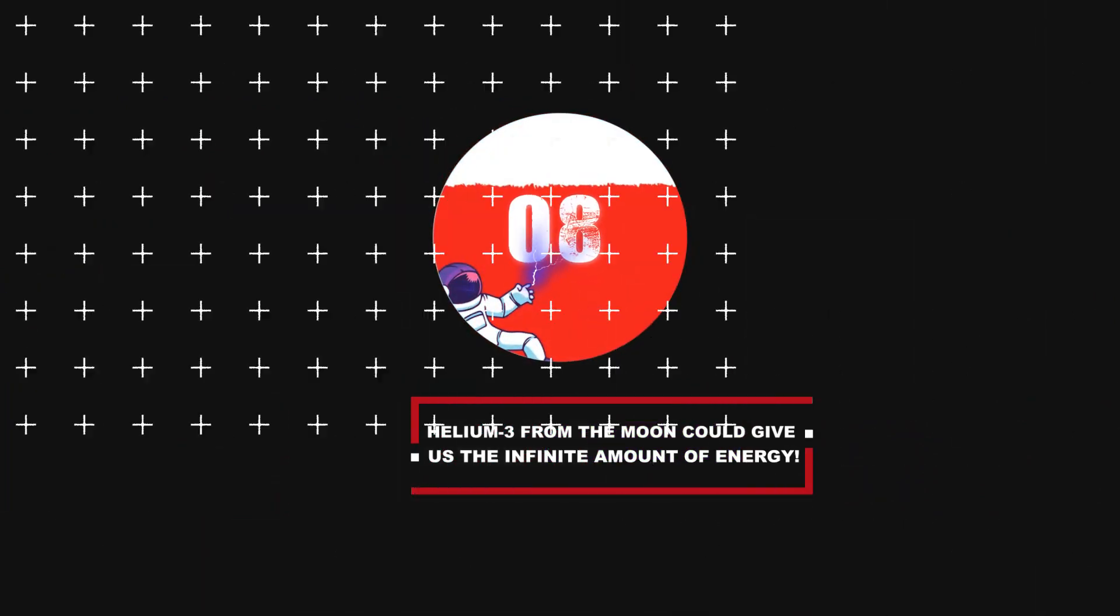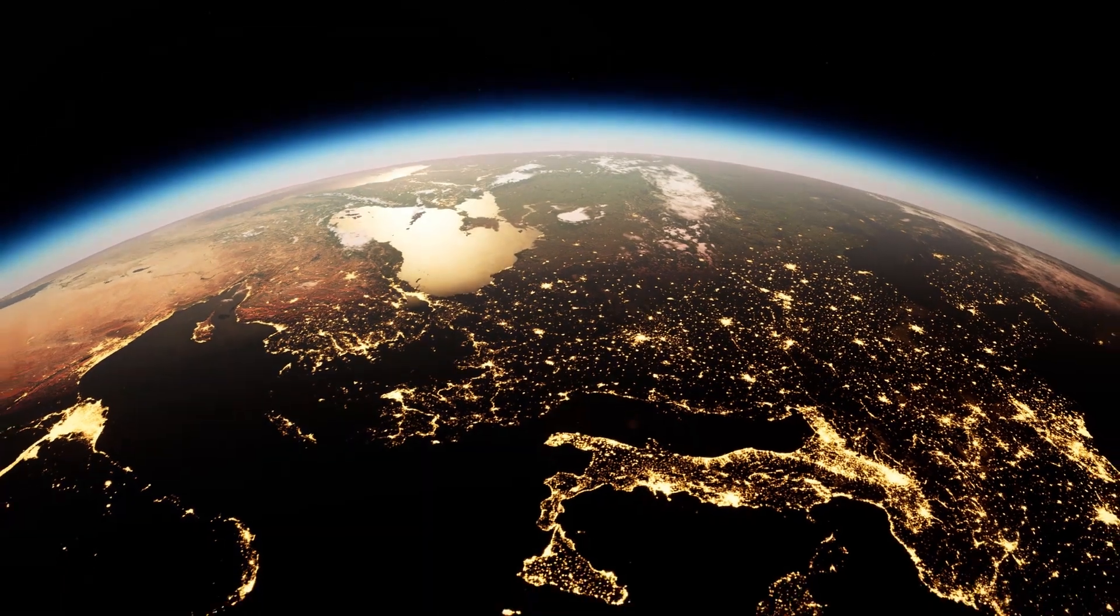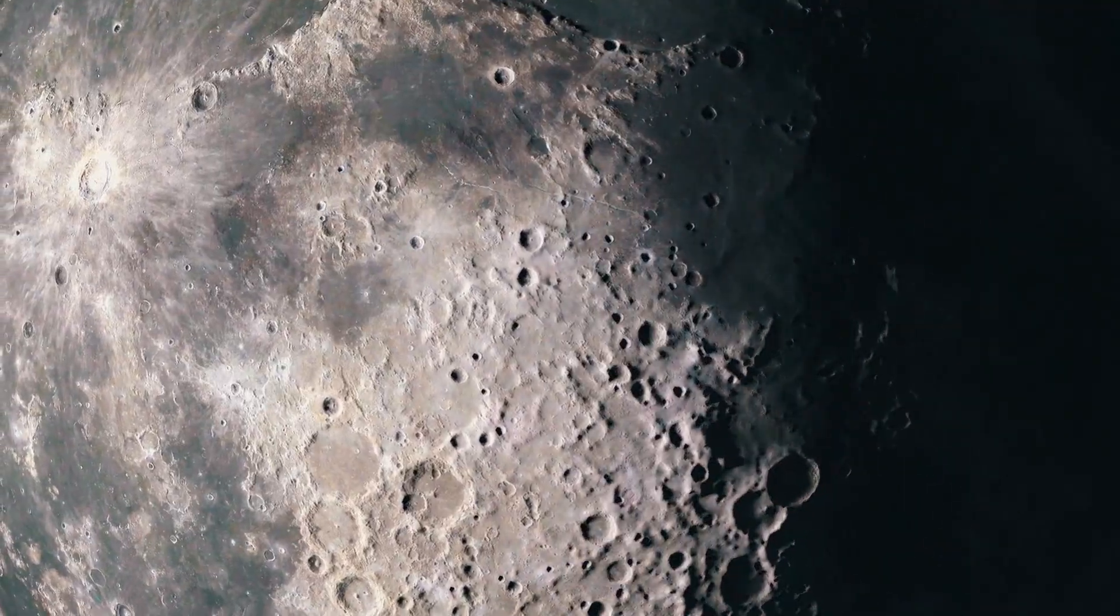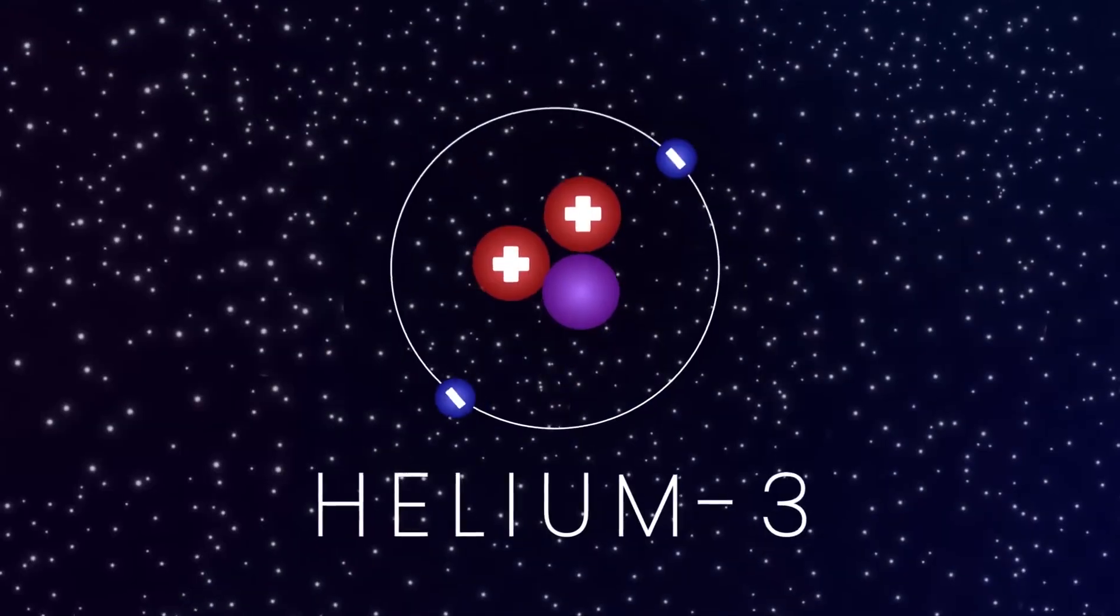Number 8: Helium-3 from the Moon could give us an infinite amount of energy. The Sun's solar wind is electrically charged. Occasionally, it clashes with the Moon and is absorbed by the rocks on the Moon's surface. One of the most valuable gases held in that wind and captured by those rocks is Helium-3.